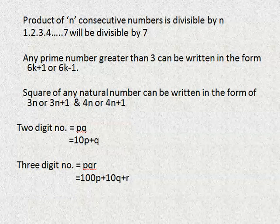7 square is 49. We can write it as 3n plus 1, that is 3 into 16 plus 1, which gives 49, which is the square of 7. Or 4n plus 1, that is 4 into 12 plus 1, which is 49, the square of 7.